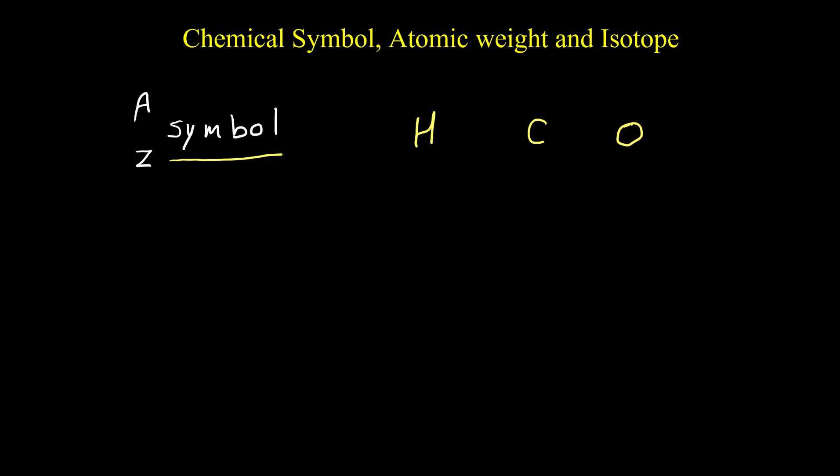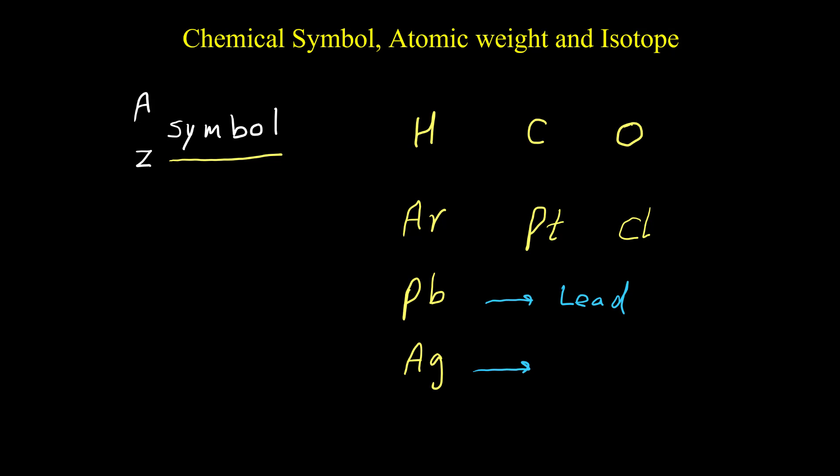These are three examples where the element symbol has only one letter, and that letter is always capitalized. If we have a symbol with two letters, the first letter should be capital and the second should be lowercase — like argon, platinum, or chlorine. There are also some symbols derived from non-English names, like lead, silver, gold, and so on.